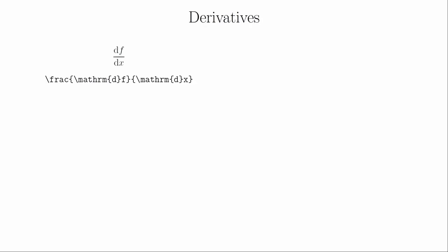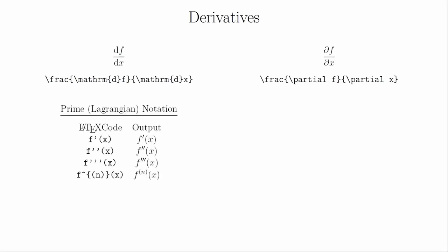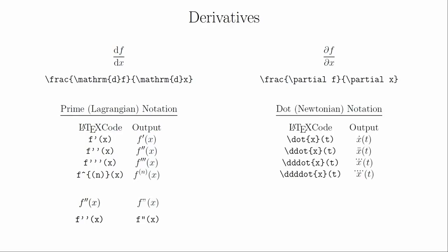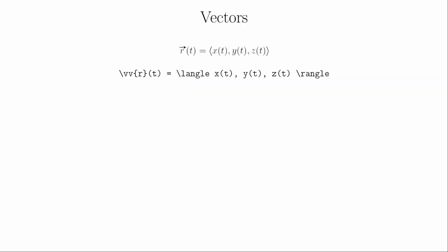Next, we'll look at some notation for derivatives. The symbol for partial derivatives is \partial. If you want to use the prime notation for derivatives, you will use an apostrophe for each derivative. The general nth derivative notation is drawn using superscript notation. Avoid using the double quote for the second derivative — LaTeX will draw it differently and your notation will be inconsistent. The dot notation for derivatives is created using specific commands, and you can only go up to four dots with this notation.